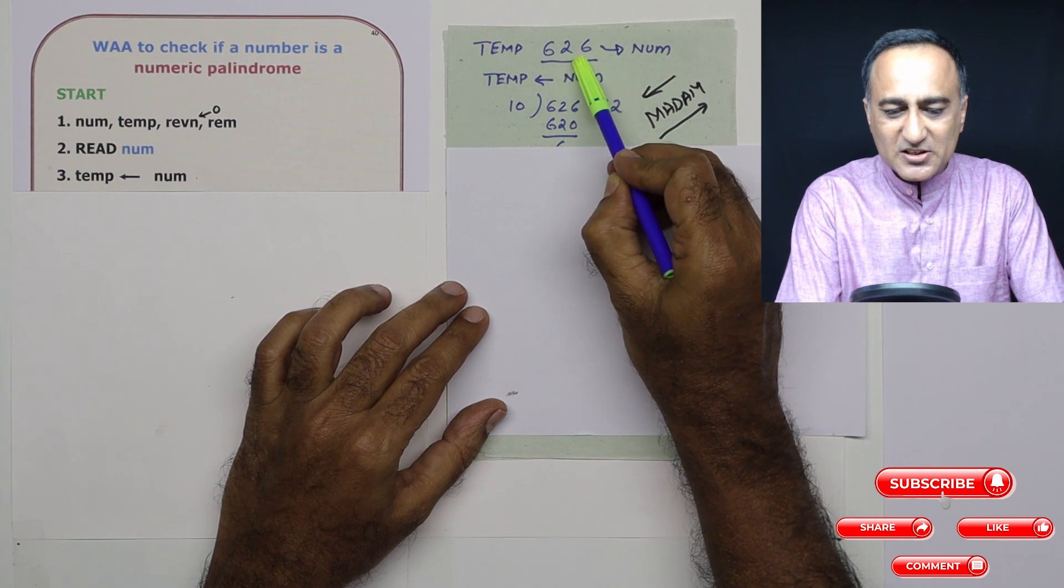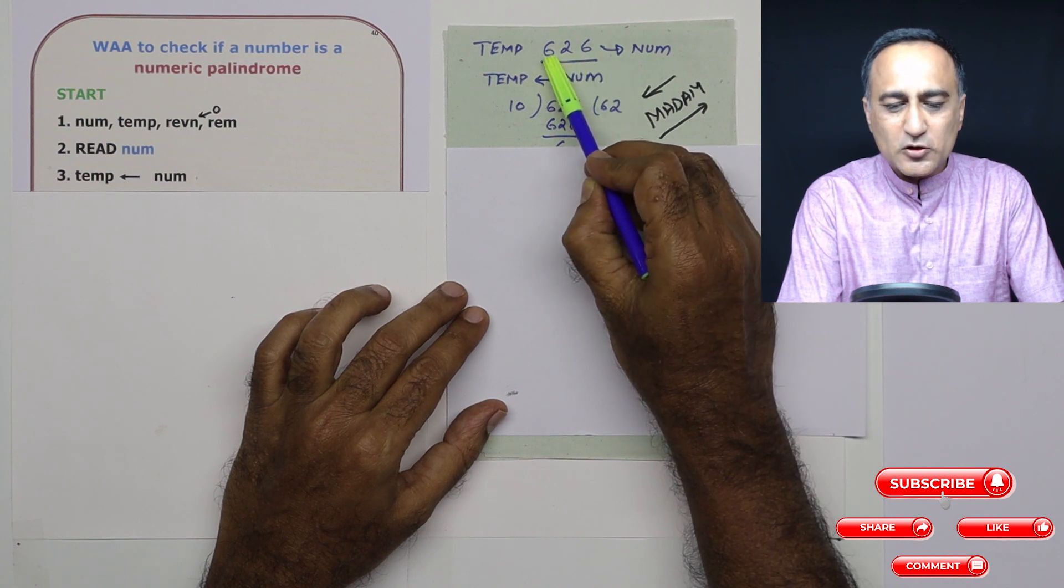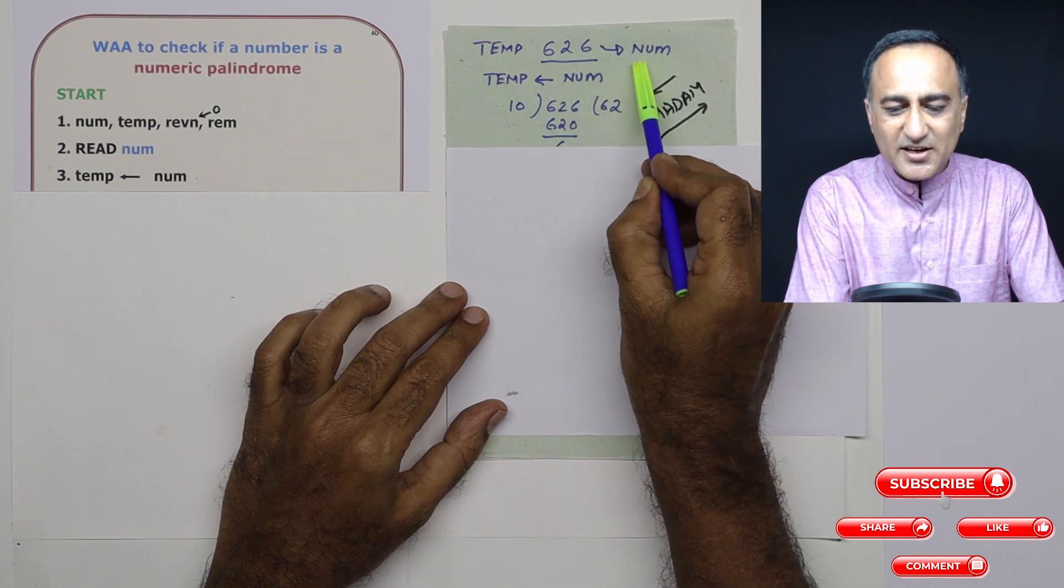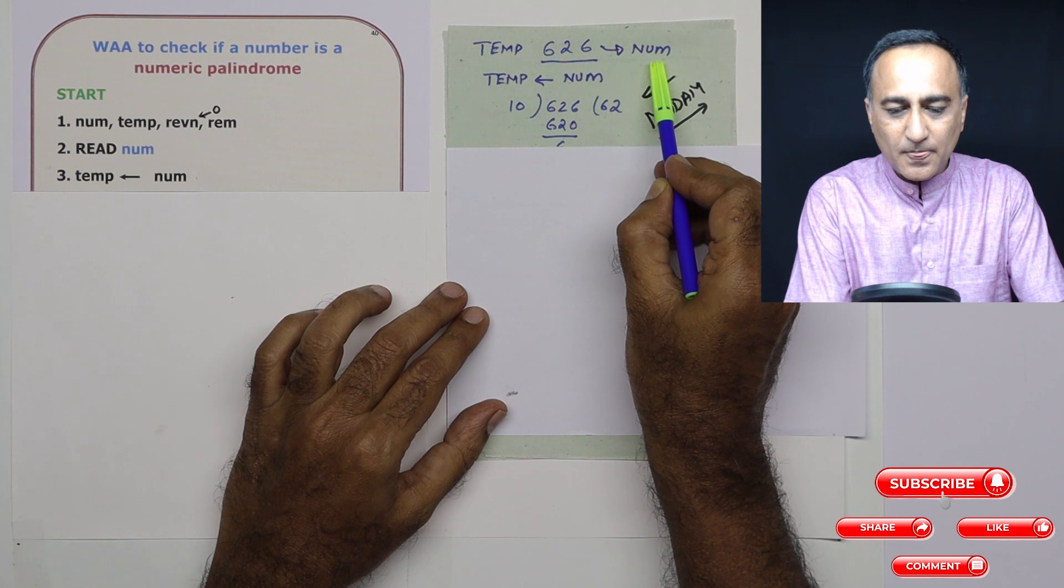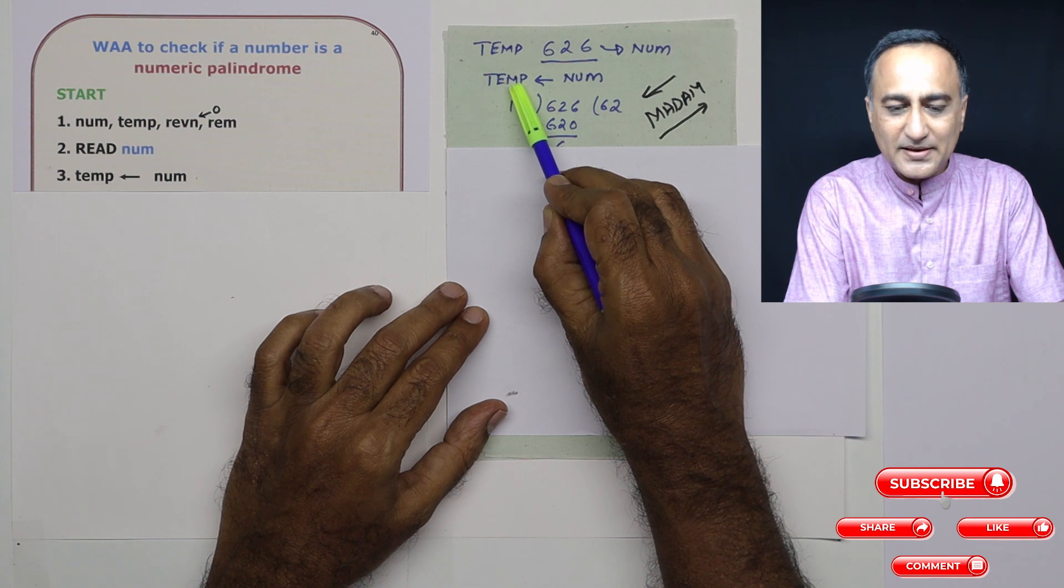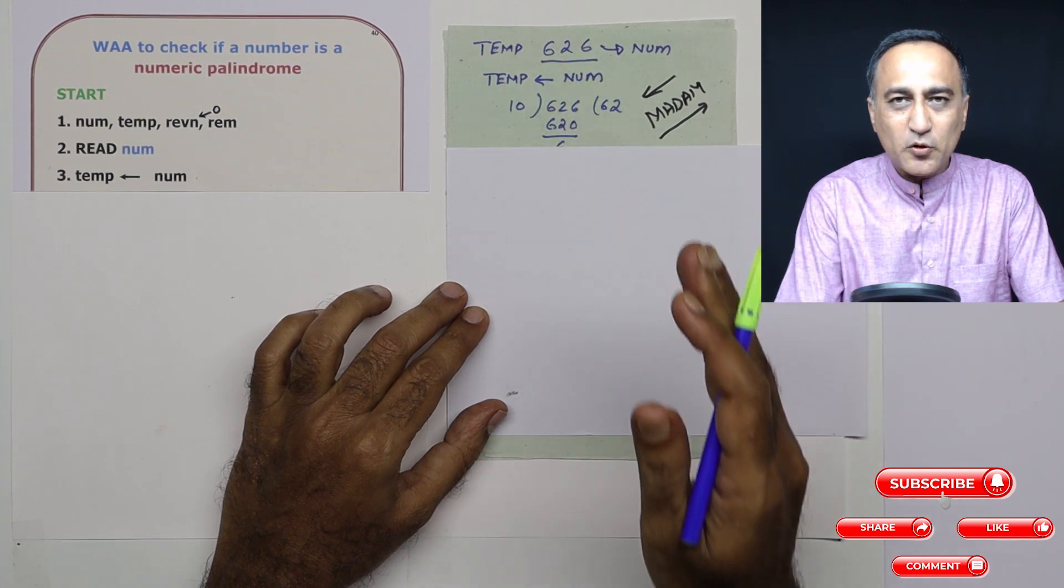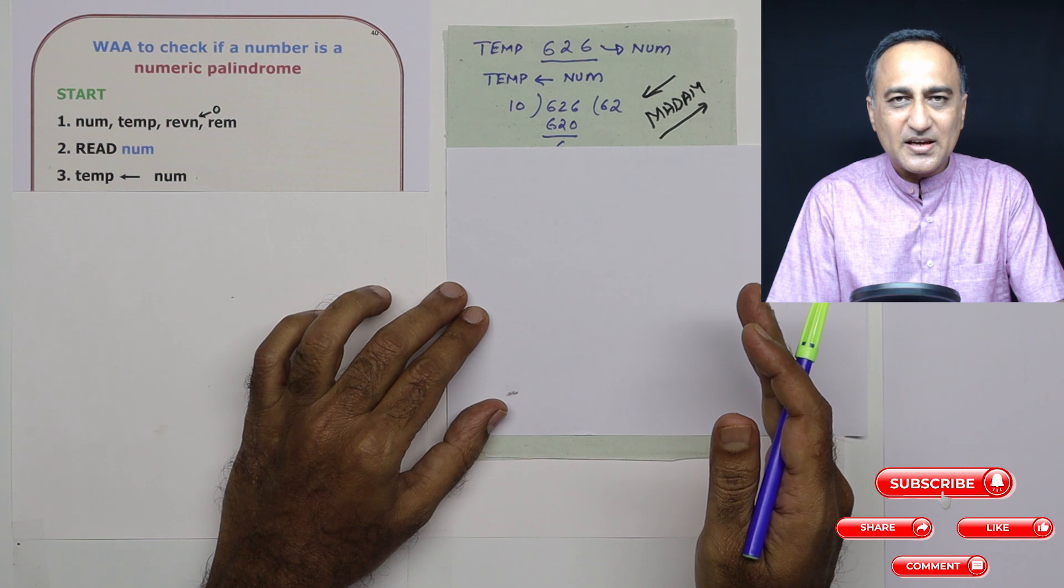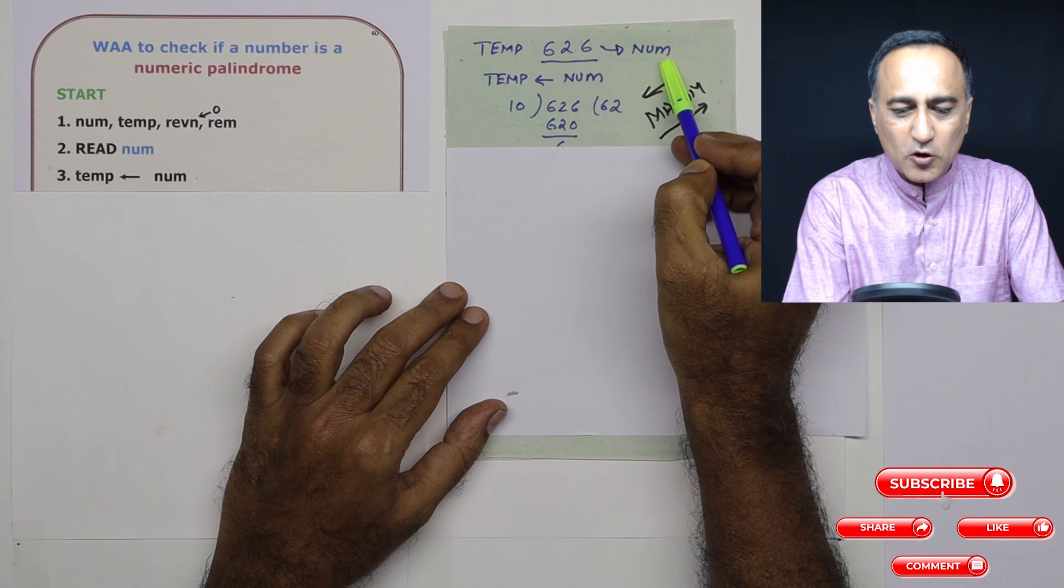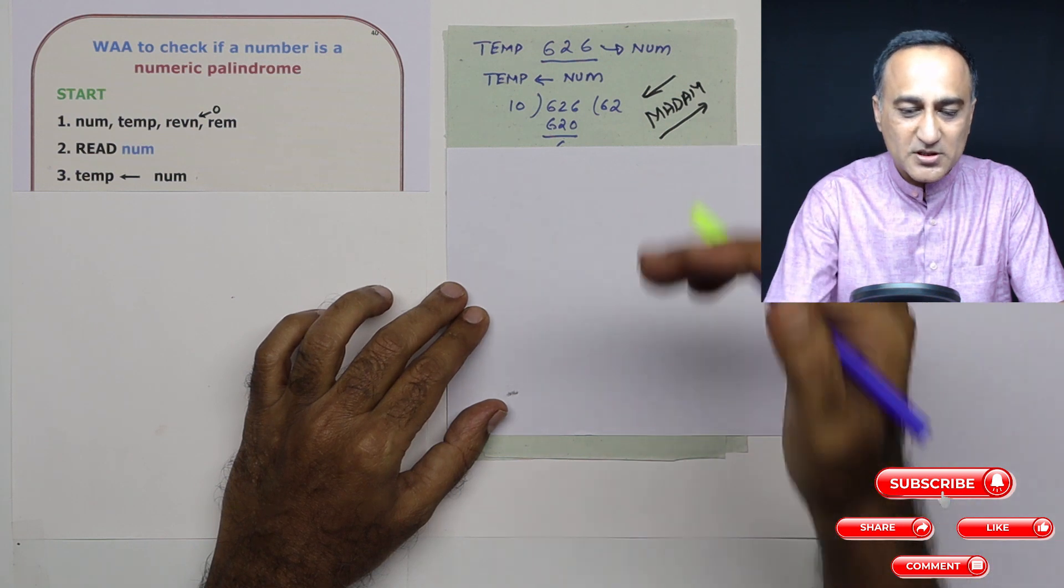Suppose I have a number like 626. This is definitely a numeric palindrome because if I reverse it, it's also 626. So, 626 is taken into a memory location called number. The first step I'm going to do is copy this number into a memory location called temp. There's a reason for it: what I'm going to do with this number is split it into its individual digits, and finally that number is going to be zero. So, if I work on the original copy, then number becomes zero and I will have nothing left to compare the reverse with.